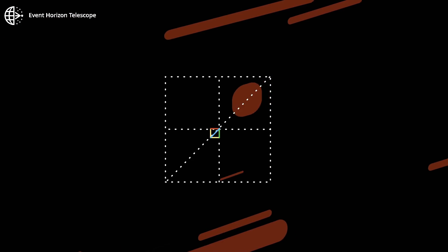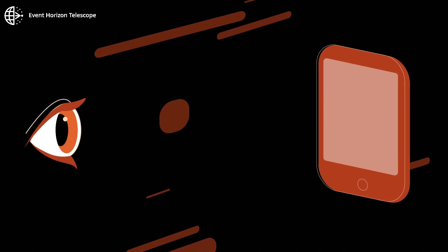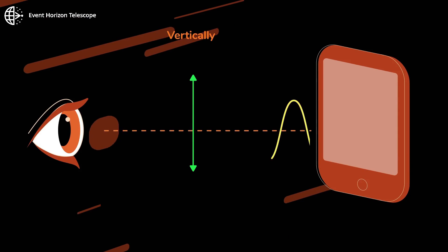If the waves have a preferred direction of oscillation, they are polarized. For example, light from your phone is vertically polarized.